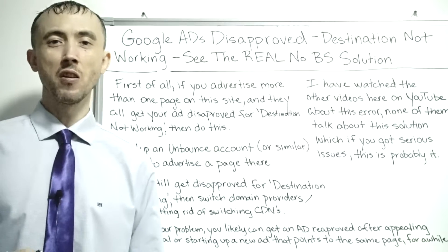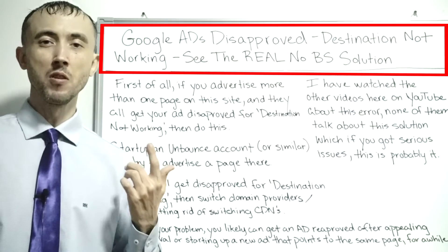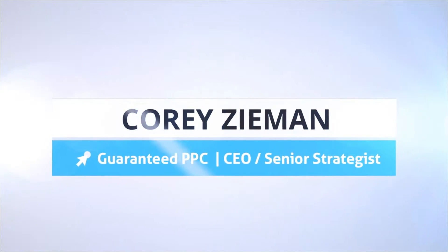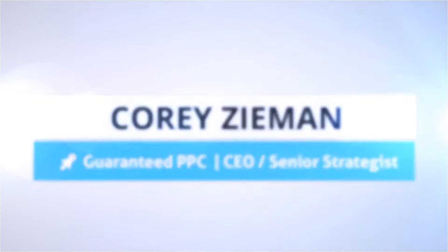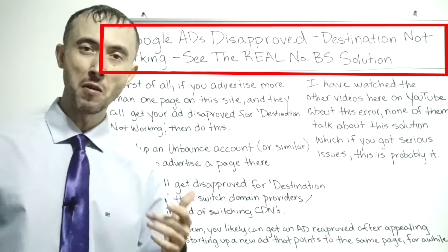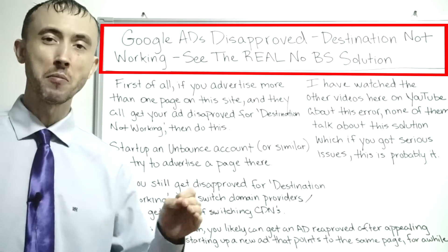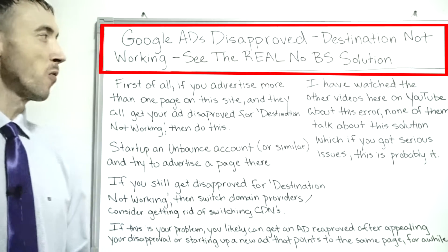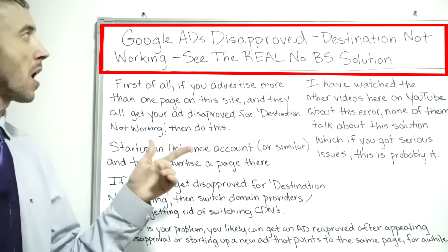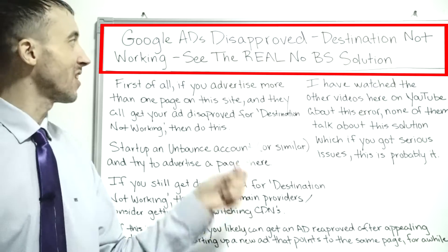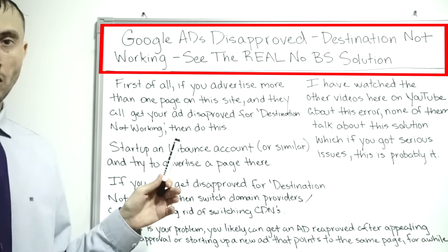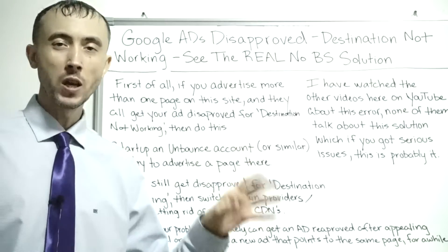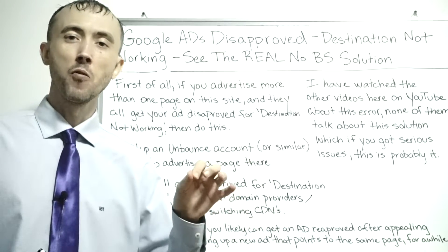Today's video is about how to get your ads re-approved permanently, not just temporarily. You may already be able to get your ad approved again, but then it's like a game of whack-a-mole — your ad gets disapproved over and over. This is about how to fix the problem of getting your ads disapproved for destination not working, and doing it right this time.